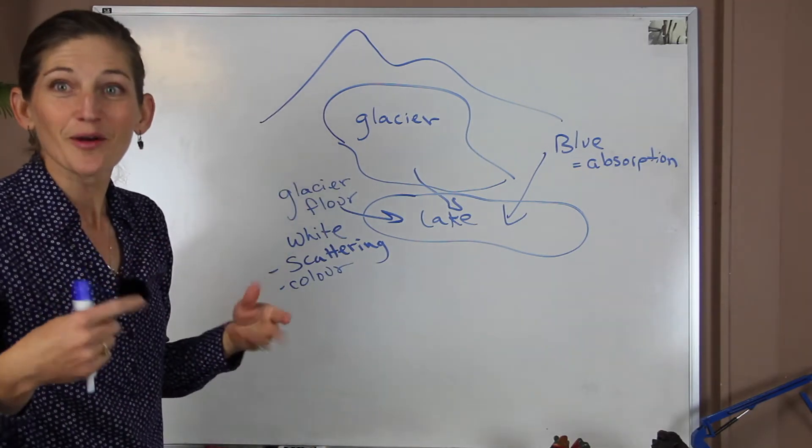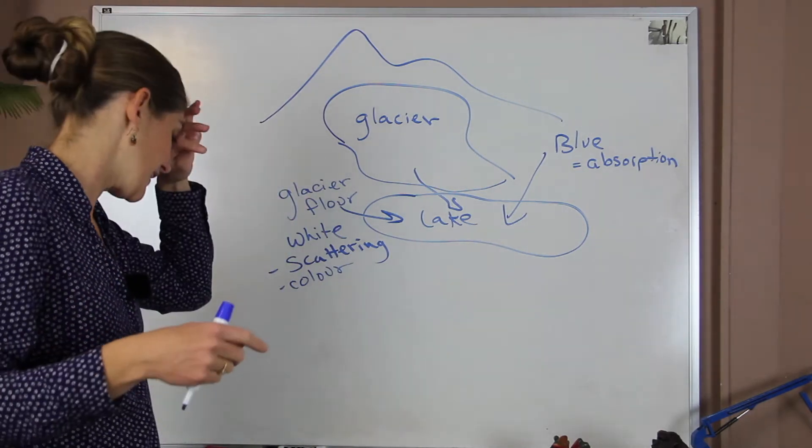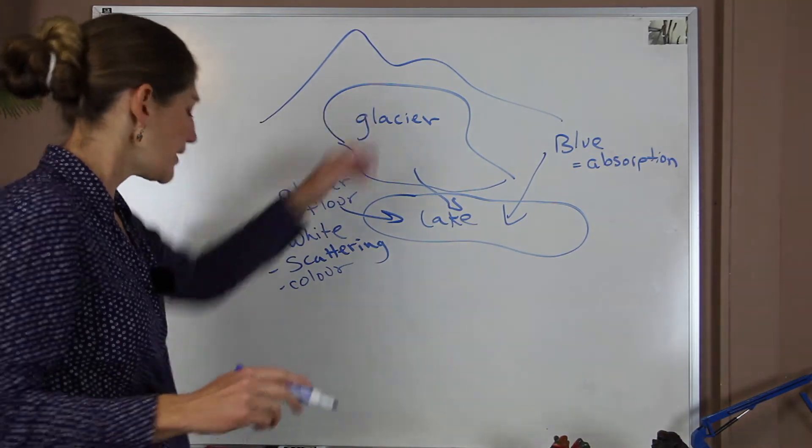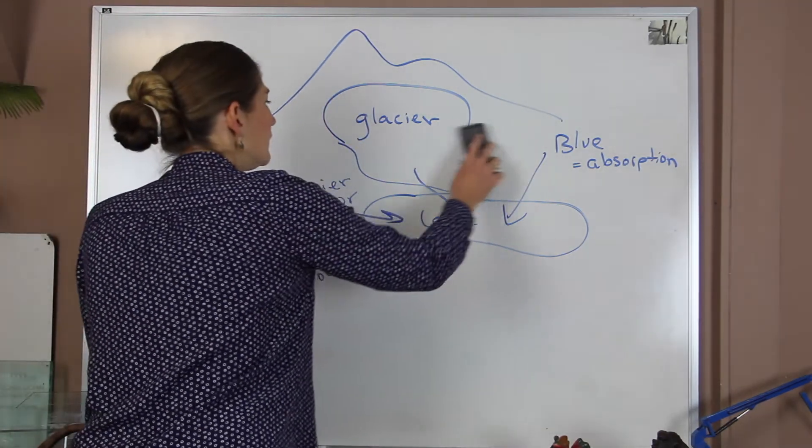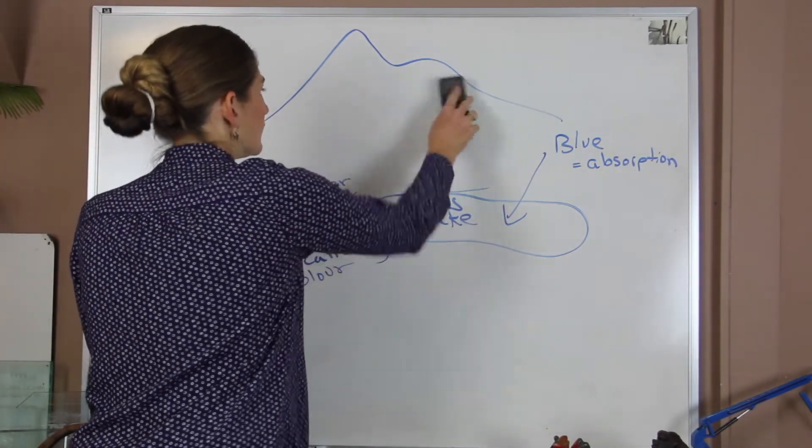Especially in places where you have a lot of limestone, that calcium and carbonate is going to really skew that color as well. So if our glacier melts away, what's going to happen?